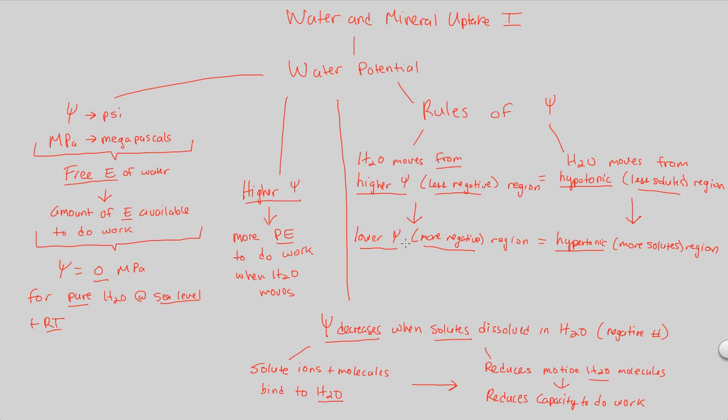H2O moves from a higher psi value, less negative, to a lower psi value, more negative region. Now we're going to see this in action and apply this to an actual plant. Don't worry, in the next flowchart. Just take a look at this. Absorb it. It's a little bit much in the beginning, but trust me, when you apply it to the plant, it makes 100% complete sense.